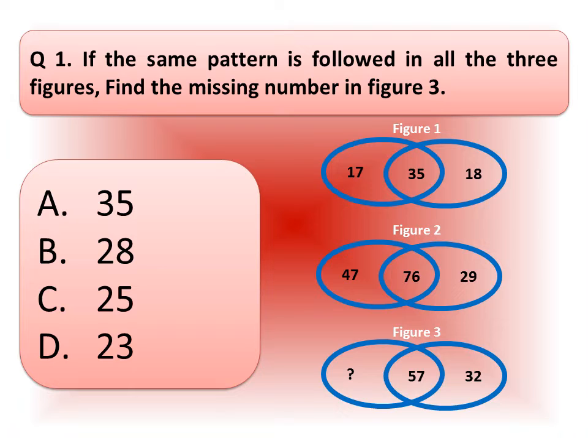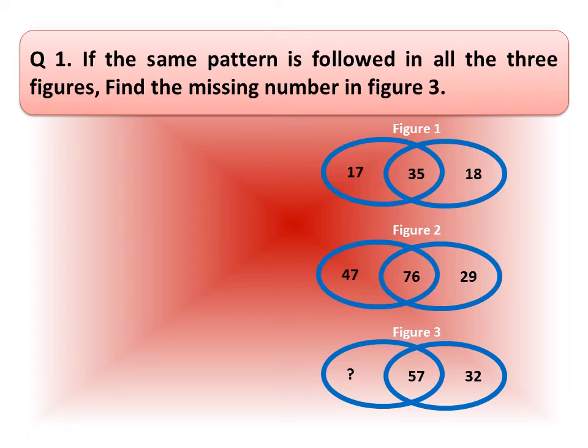Now, let's move to the solution. Look at the solution. In figure 1, the middle number 35 is the addition of other two numbers, number 17 and number 18 as shown in the white box.